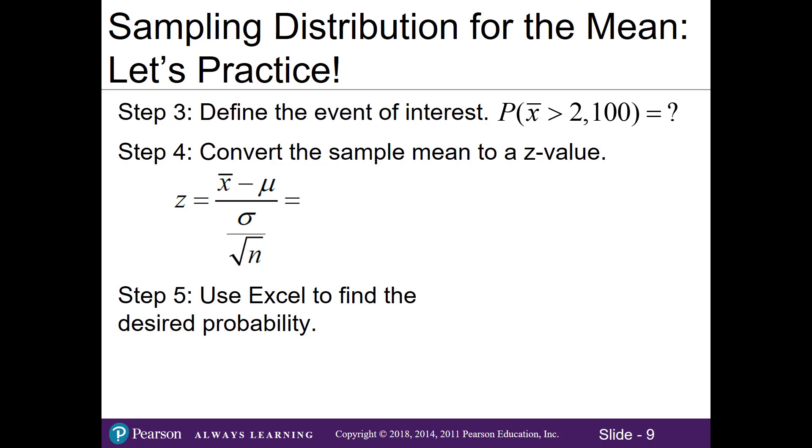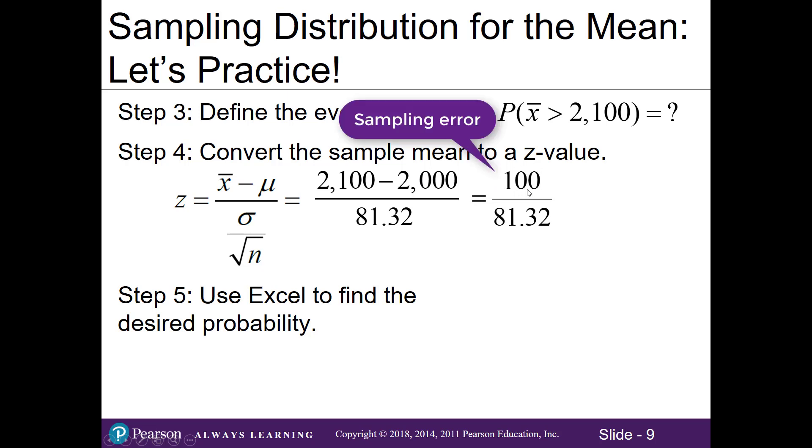In step 4, we convert our sample mean into a z value. We'll plug in our sample mean of 2100, our mean of 2000, and divide it by the standard error. So 2100 minus 2000, and the standard error we calculated is 81.32. I simplify 2100 minus 2000, which is 100. This represents our sampling error. Then I divide it by our standard error, which gives us 1.23 as our z value.